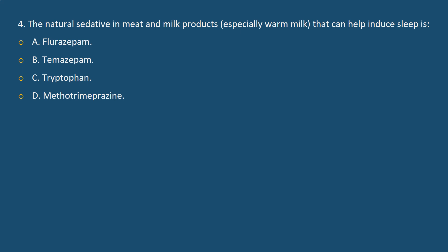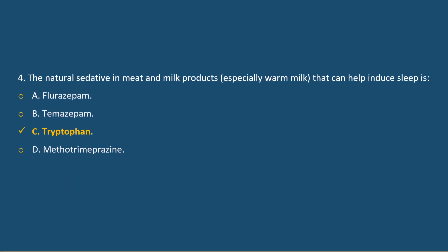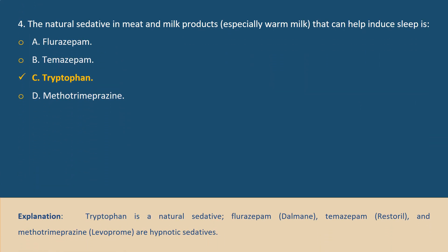Question 4. The natural sedative in meat and milk products, especially warm milk, that can help induce sleep is: A. Flurazepam. B. Temazepam. C. Tryptophan. D. Methotrimeprazine. Answer C. Explanation: Tryptophan is the natural sedative. Flurazepam (Dalmane), temazepam (Restoril), and methotrimeprazine (Levoprome) are hypnotic sedatives.